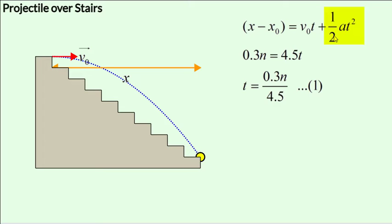This term half at squared would be 0. And with that, we have 0.3n equals 4.5t. And therefore, t would be 0.3n over 4.5, which is our first equation.